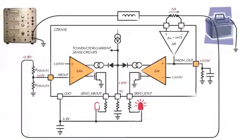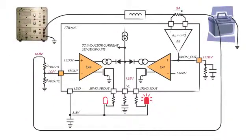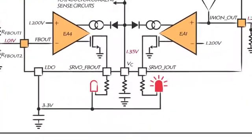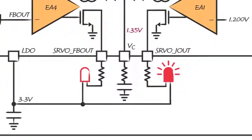In this example, the battery voltage is at 12.8 volts and the output current is at 5 amps. Therefore, the regulation loop that is in control is the output current. The servo I-out status pin is thus pulled low and its LED is lit.